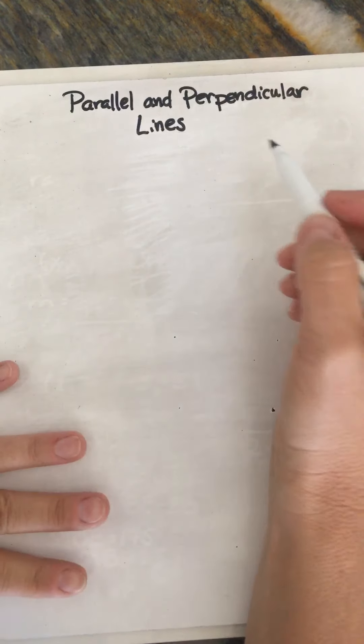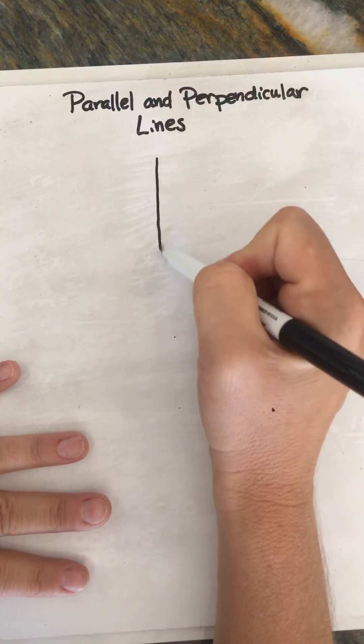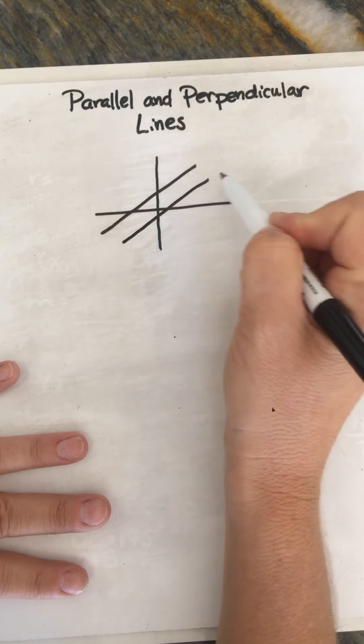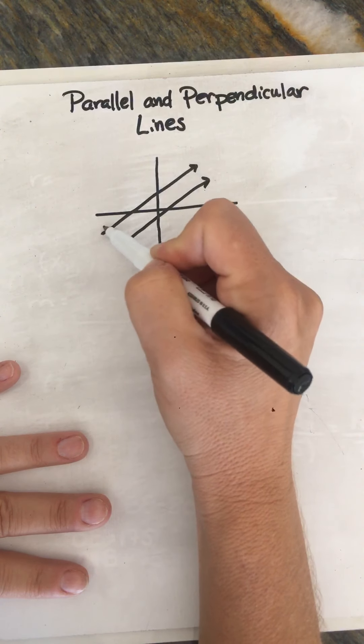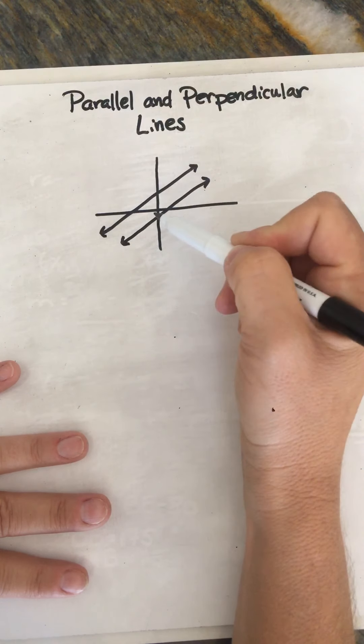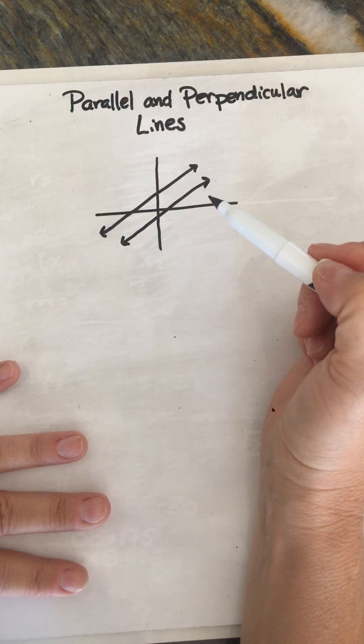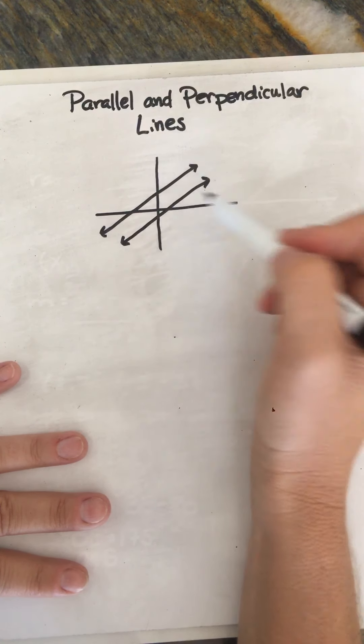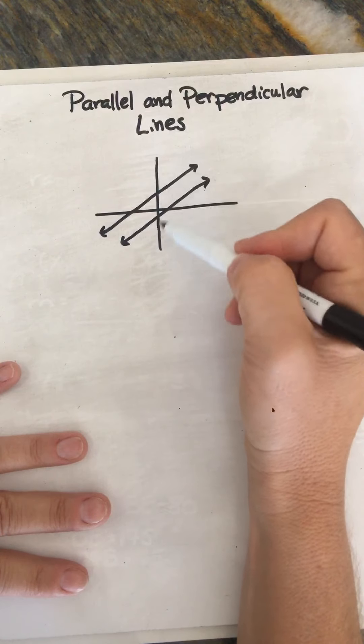So parallel lines, if you remember, are two lines that never touch. Now you've been in geometry, so you know that these lines are coplanar. If they were non-coplanar, you could have skew lines, right? So coplanar lines that will never intersect.